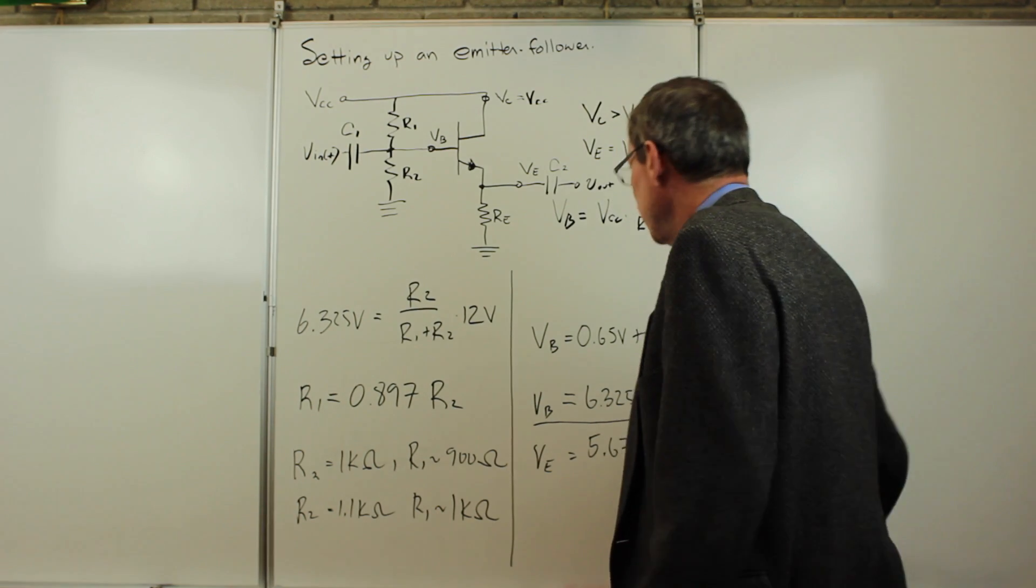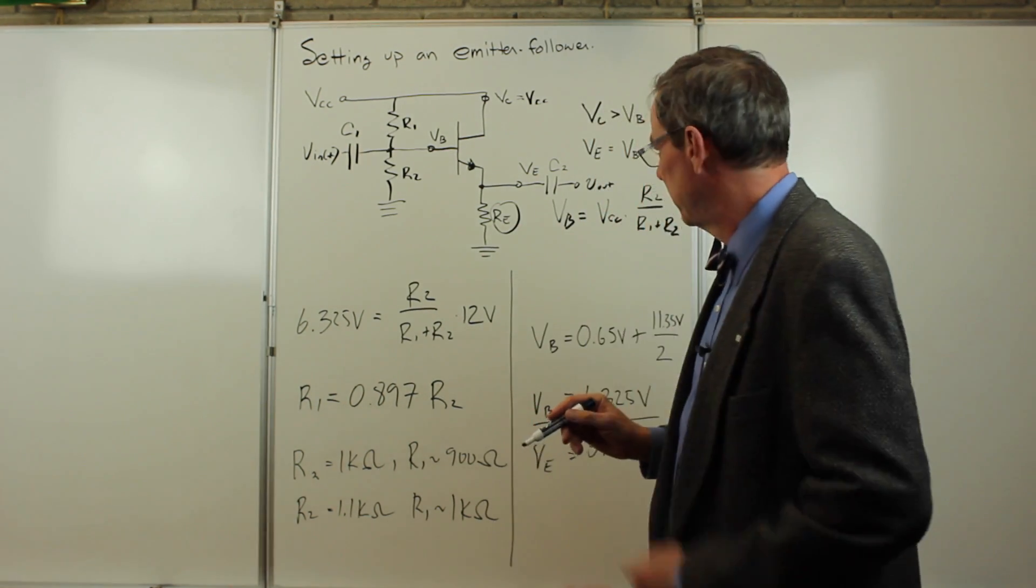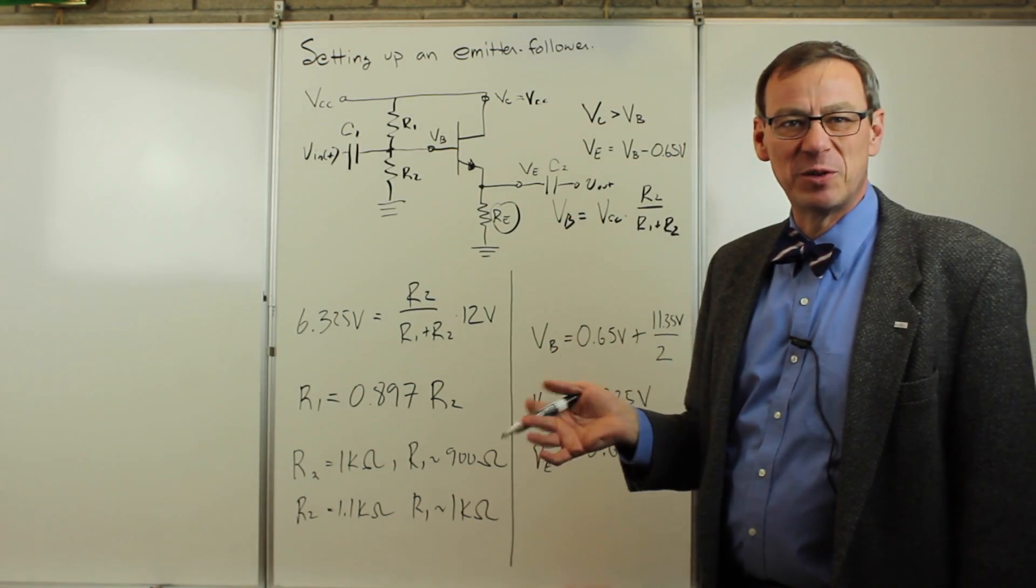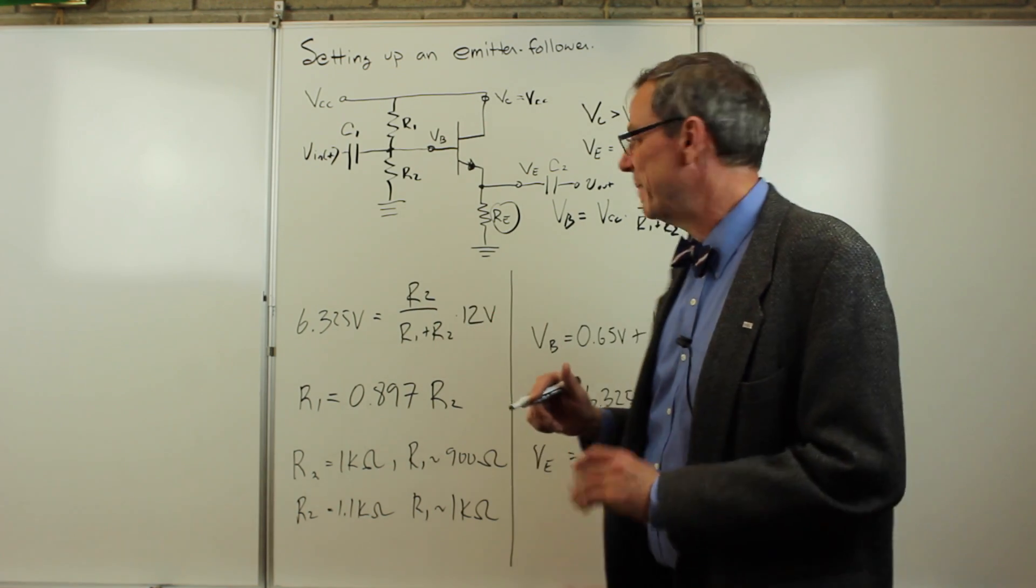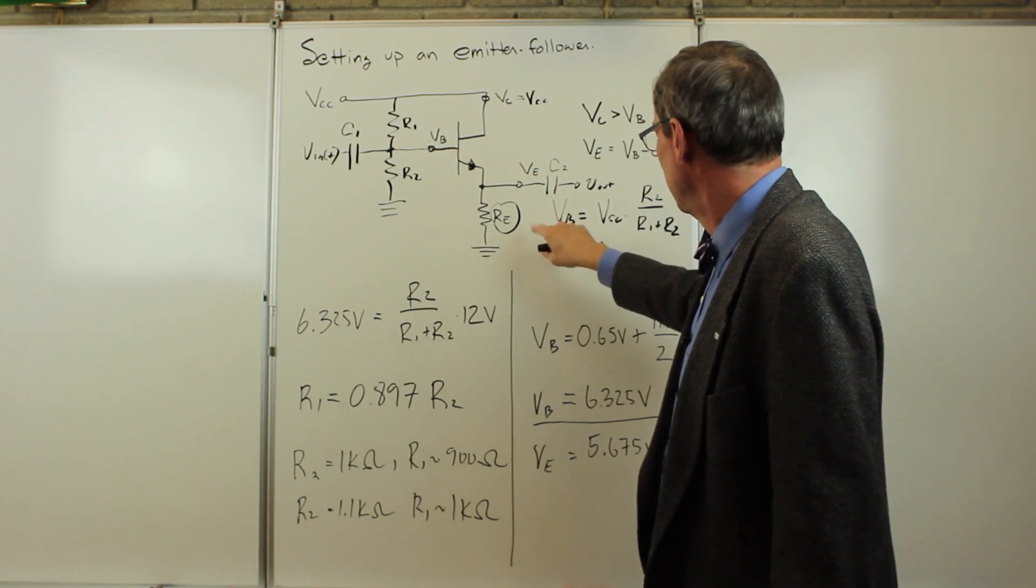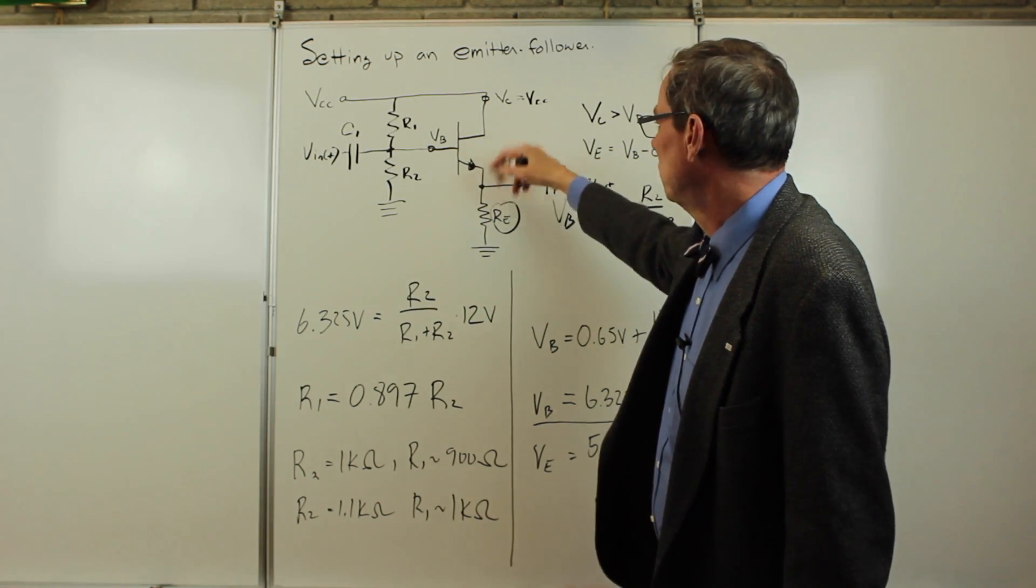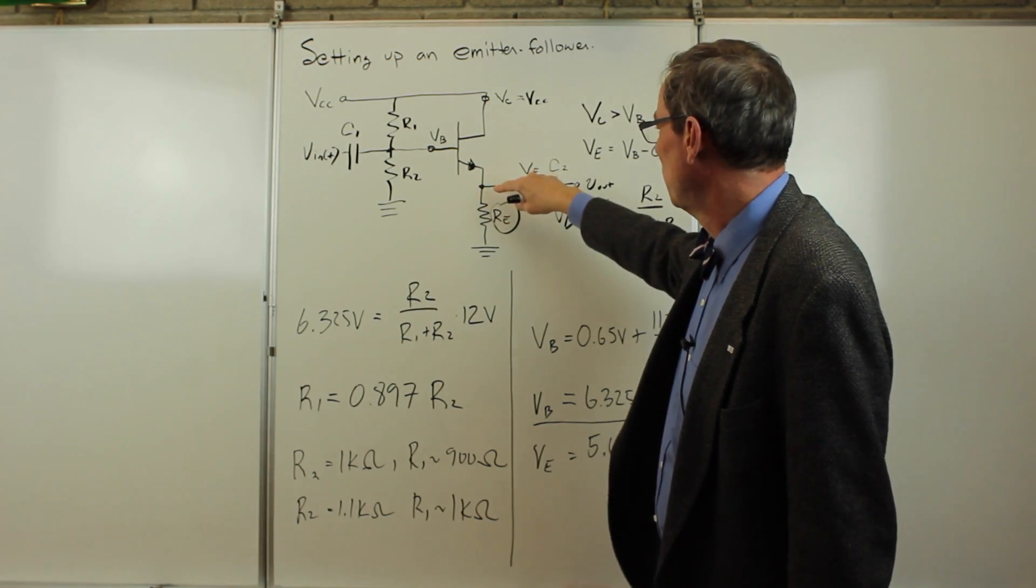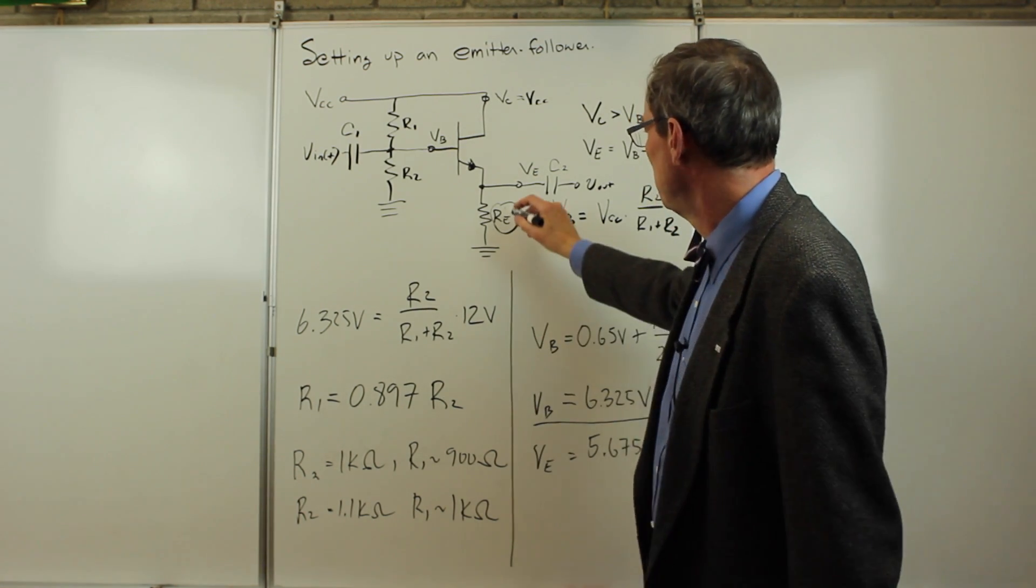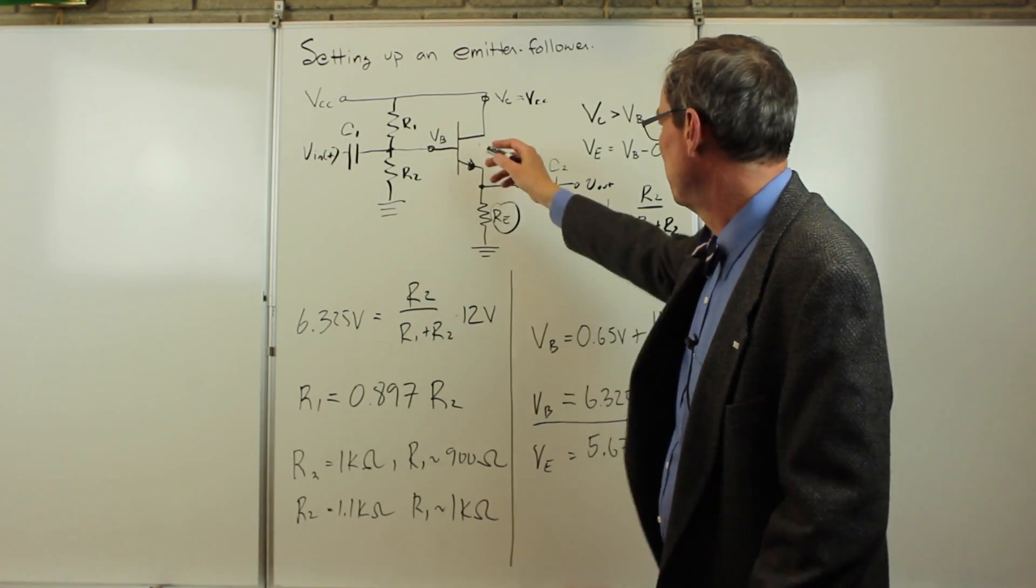We've picked R1 and R2. The next thing we need to do is choose this resistor RE. We want to choose that so we don't burn up the transistor, meaning we don't exceed the maximum power. So we're basically worried about VCE and the current going through here, IE. Typically you can look at ratings on these transistors. The ones we have are good up to a few hundred milliamps. We would maybe choose IE to be something like 10 milliamps, which should be very safe.